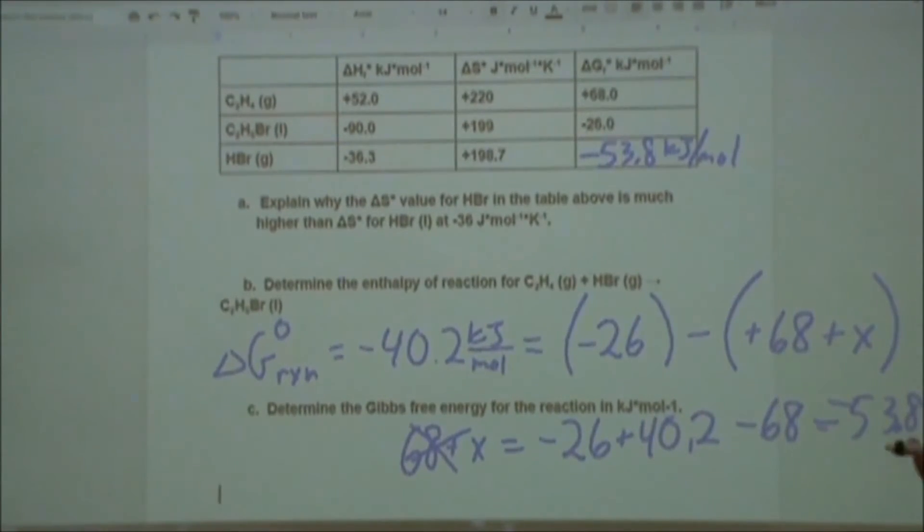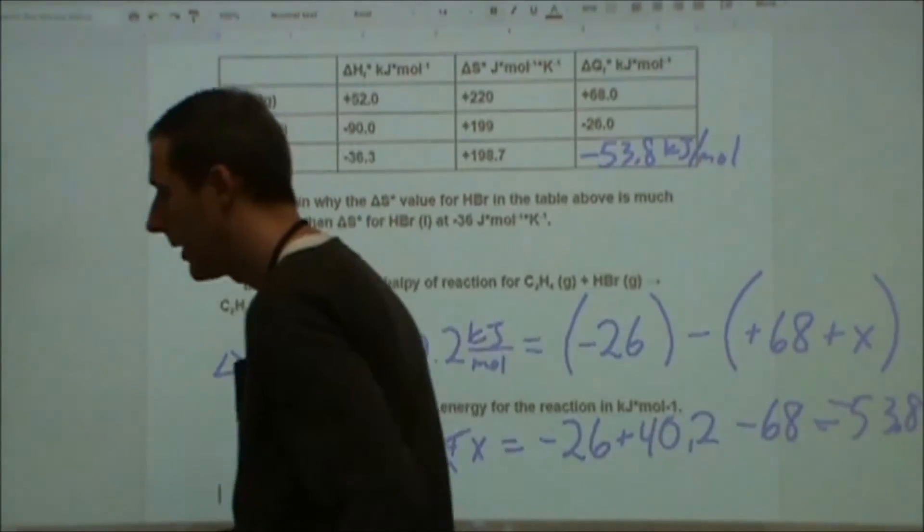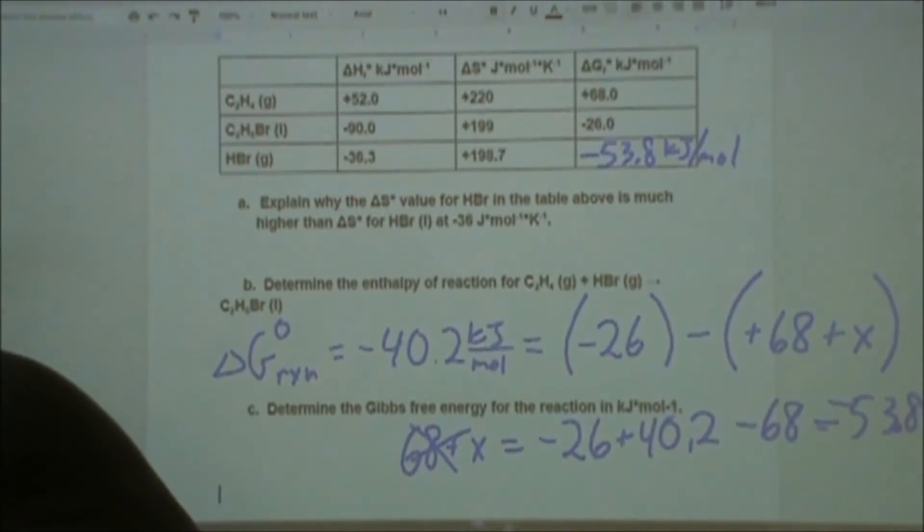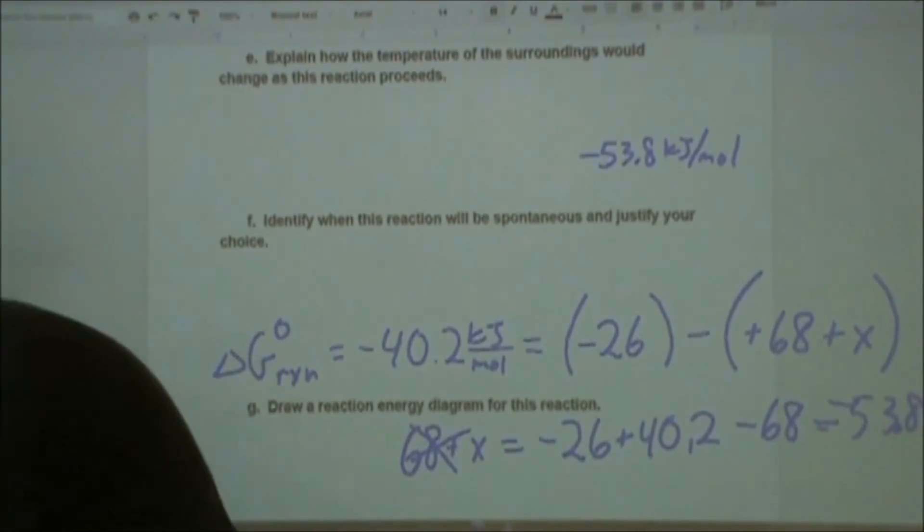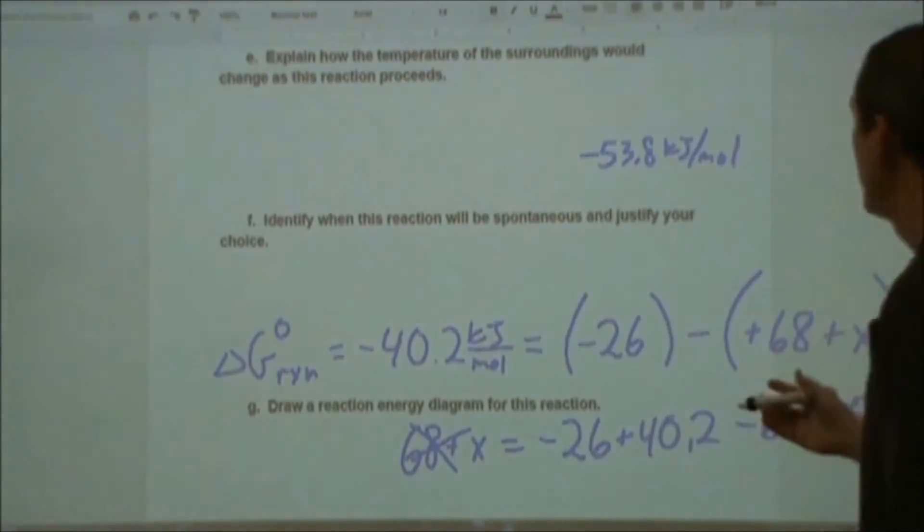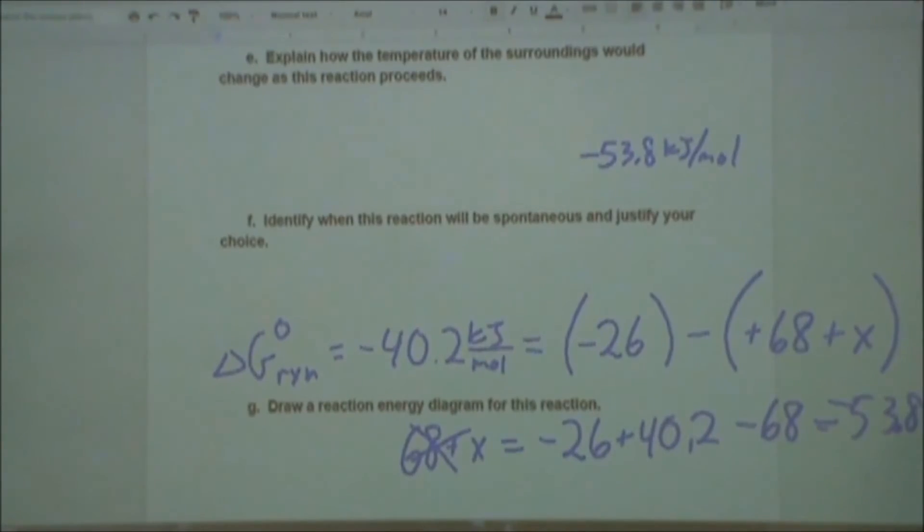So we could then plug in that this is negative 53.8 kilojoules per mole. And that would be our solution to part D. So now we're going to scoot down a little bit, take a look at some of the later questions. We have our solution to part D. Now we're going to look at part E.